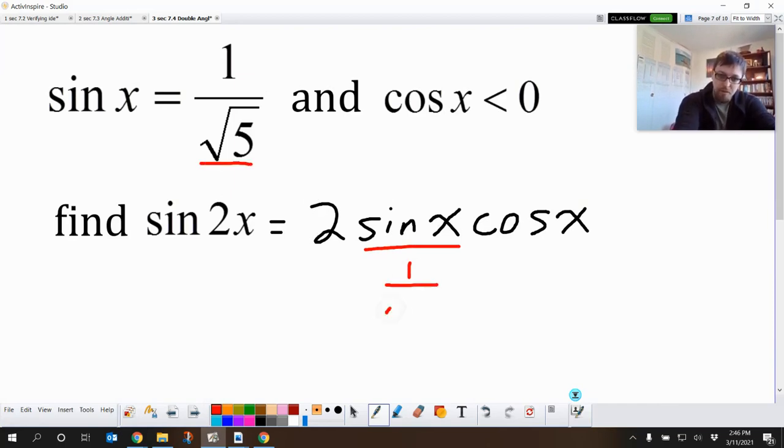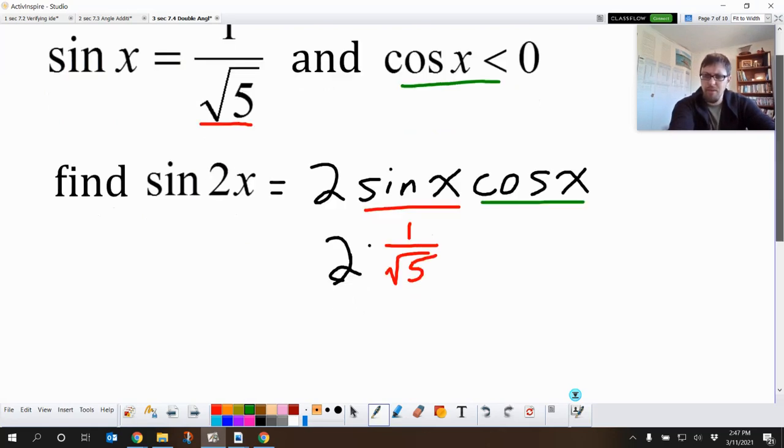So we get 1 over the square root of 5. And then we get a 2. That 2's still there. And then we just got to figure out what cosine of x is. And they gave us, oh shoot. All they told us is that it was negative. They didn't tell us the exact value of it. Okay, well, that's fine. We can figure that out.